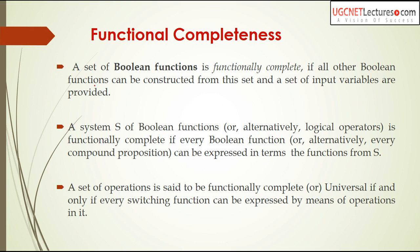We will see some examples of how to prove a set is functionally complete or not, including exam-style questions. A set of operations is said to be functionally complete or universal if and only if every switching function can be expressed by means of operations in it. You must have heard about universal gates — those are gates from which we can do any operation, such as AND, OR, NOR. For example, NAND is a universal gate and NOR is a universal gate. From the NAND gate you can get AND operation, and from the NOR gate you can get OR operation.